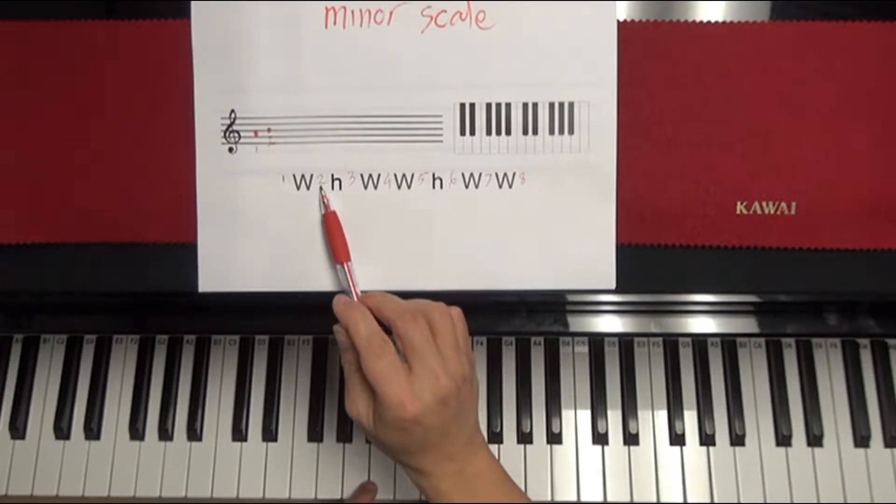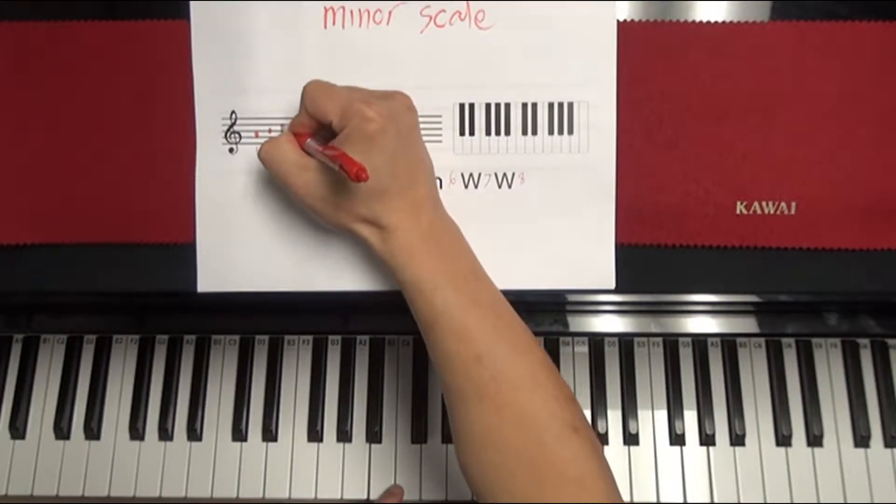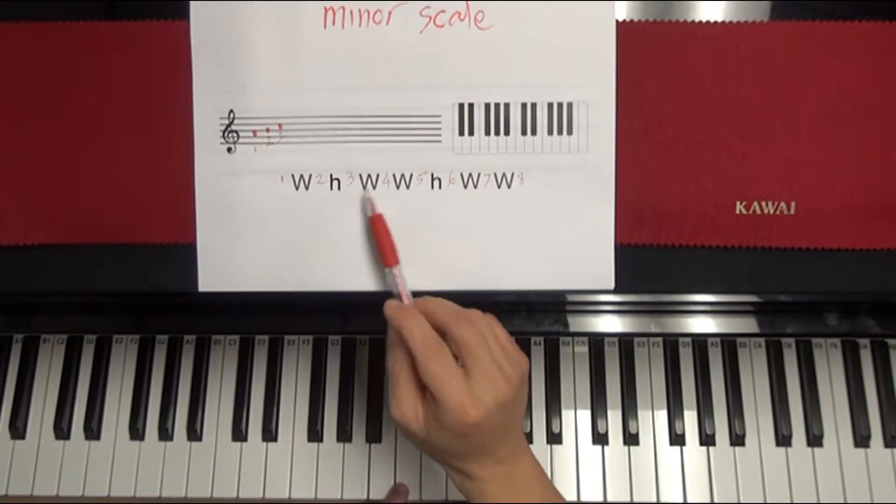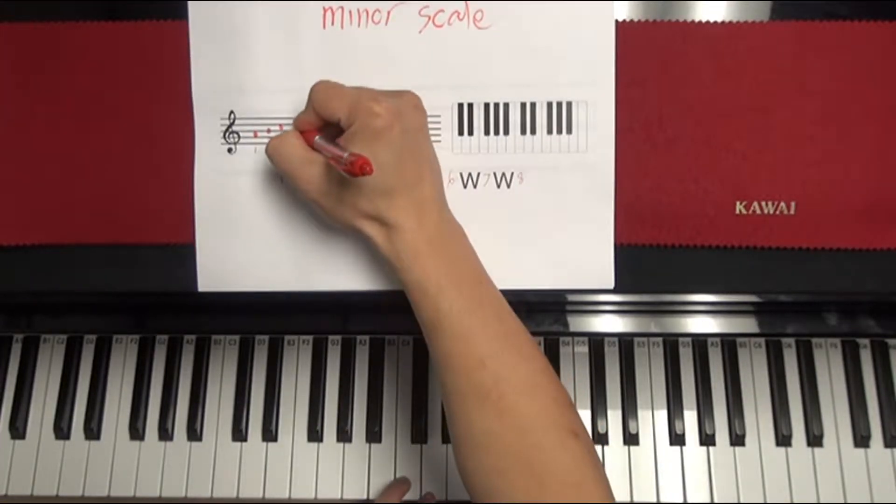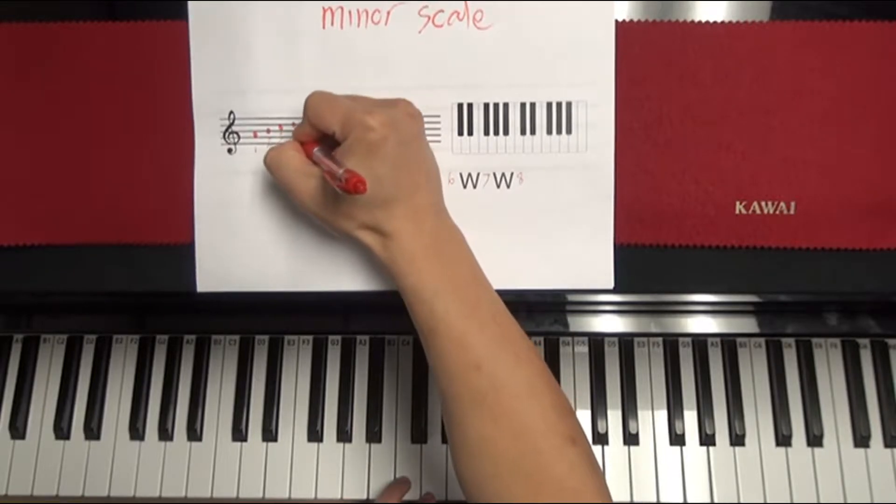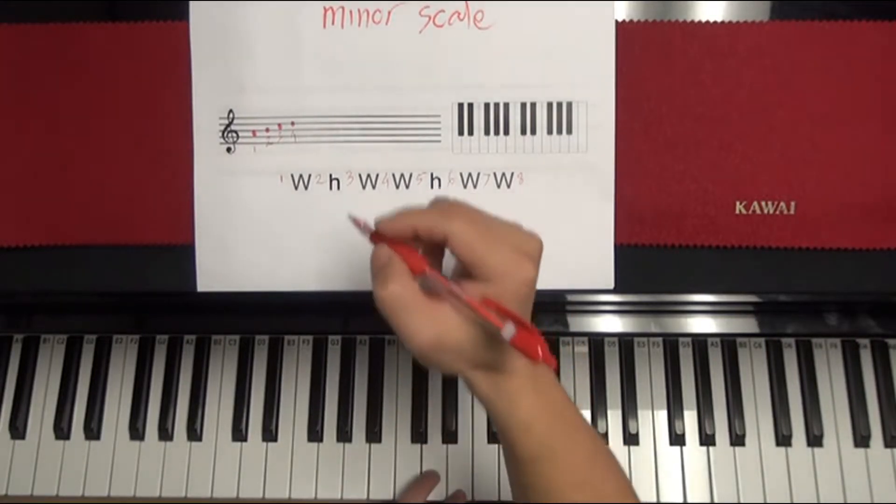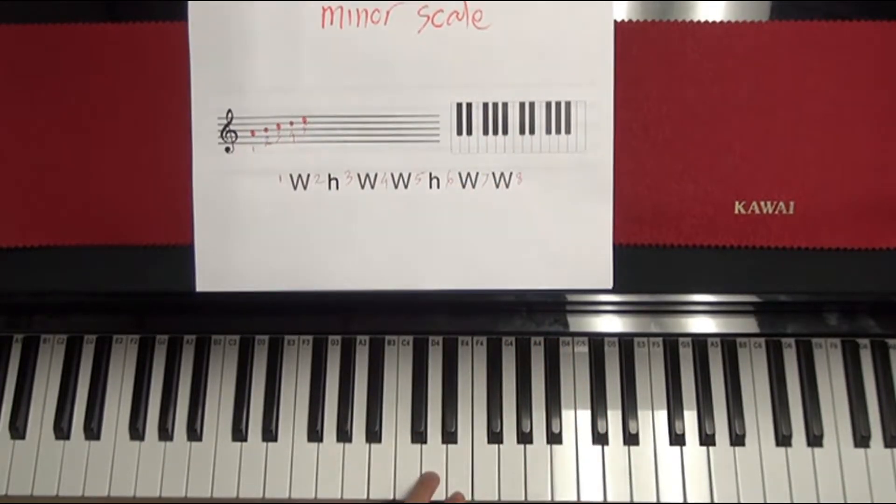So that's note number two. Now the formula requires that from two to three have to be half, right? So from B to C, it has to be half, when for some reason, it's perfectly half. So you don't have to worry about adding sharp or flat to it. And now from three to four, it has to be whole, and it happens to be C to D, that's whole. So four, and then from four to five, it needs to be whole, too. So it needs to be whole. So from D to E, that's perfectly whole also.